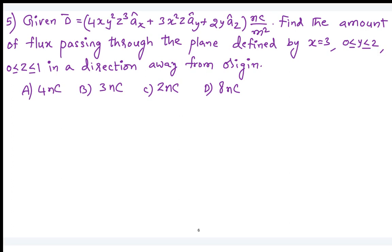So anybody, can you tell me what is the formula or the approach? You know the flux density — how to calculate the total flux? Phi equals the closed integral of D dot dS. What should be the value of dS here?